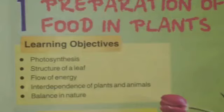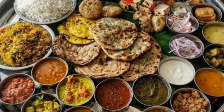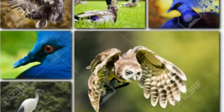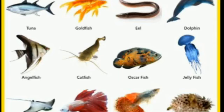Good morning children. I hope you are all fine. This morning I am going to teach science for grade 4 and the topic is preparation of food in plants. In this world, all living things need food to survive. For example, animals, birds, fish, plants, insects and human beings are living things. All living things eat food to live.